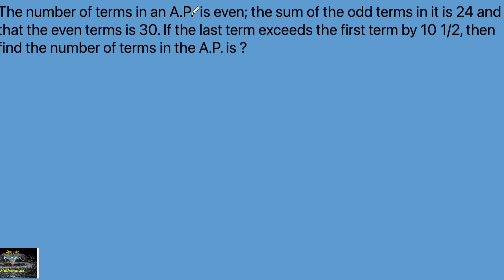Given the number of terms in an AP (arithmetic progression) is even, the sum of the odd terms is 24 and that of the even terms is 30. If the last term exceeds the first term by 10 and a half, find the number of terms in the AP.